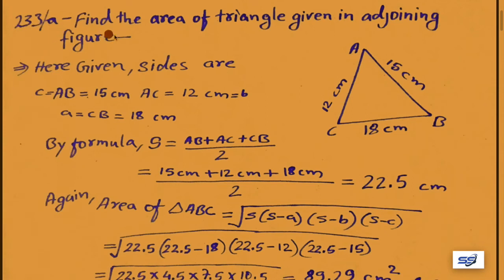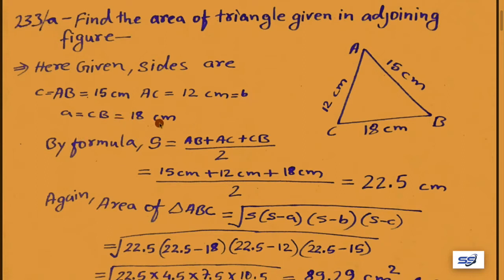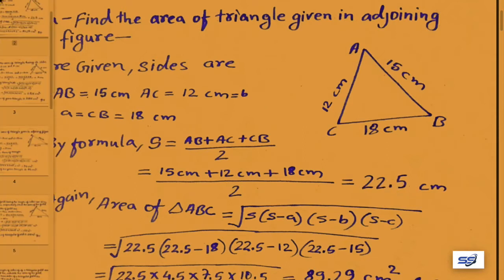Question 233(a): Find the area of the triangle given in the adjoining figure. Triangle ABC has sides AB equal to 15 cm, AC equal to 12 cm, and BC equal to 18 cm. By formula, s equals (AB plus AC plus CB) upon 2, which equals (15 plus 12 plus 18) upon 2, giving s equal to 22.5 centimeter.